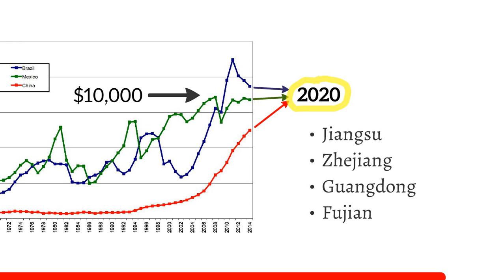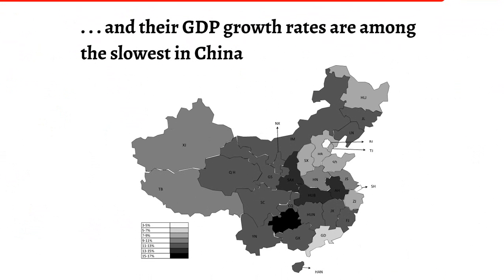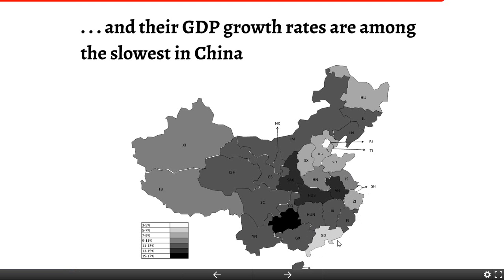Guangdong resembles nothing so much as Brazil — similar in size and population, similar in economic structure, similar on a range of economic statistics. The problem for China is that even though these eastern coastal provinces have already caught up with Latin America, they are the slowest-growing provinces in China. The two richest provincial-level units — Shanghai and Beijing — are also the two slowest-growing. The other slow-growth areas are precisely Jiangsu, Zhejiang, and Guangdong province.